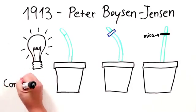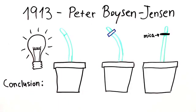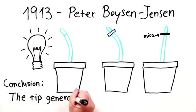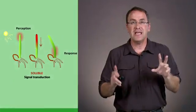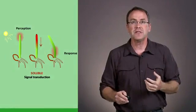So what's the conclusion from this experiment? The conclusion is that the tip of the plant is generating a soluble signal that is somehow traveling down the plant, influencing it to bend. So Darwin's influence is a soluble signal.